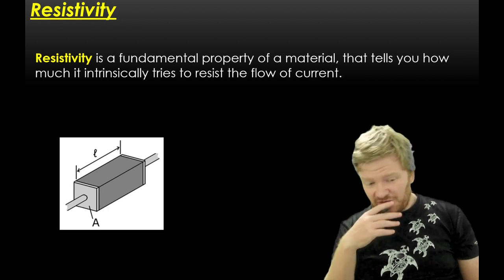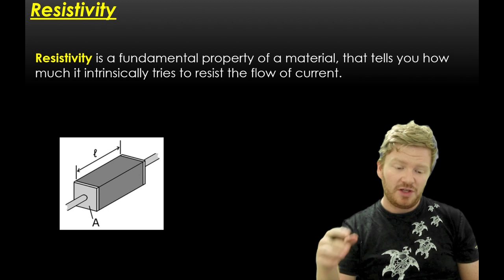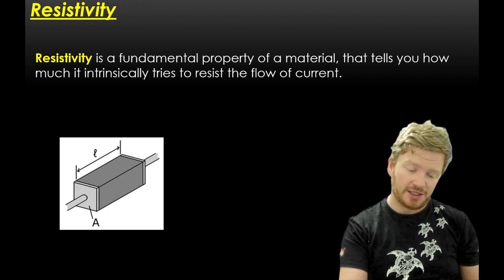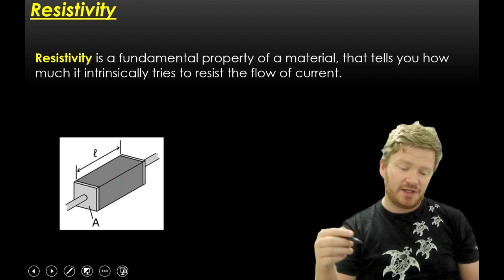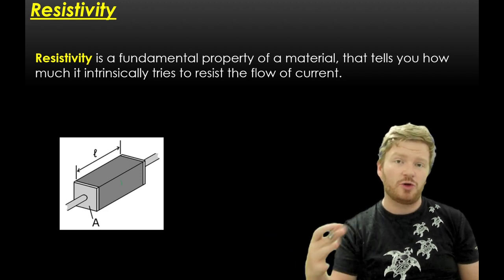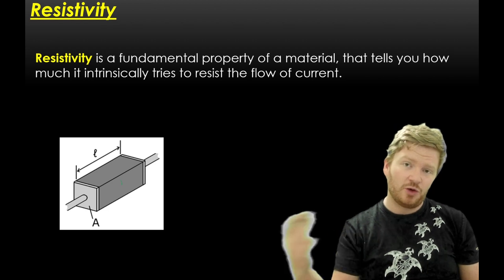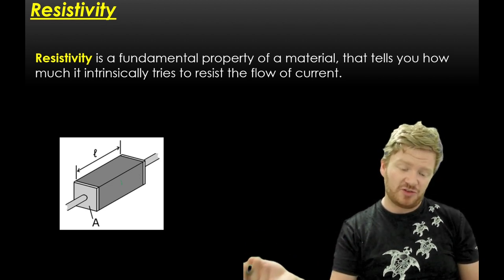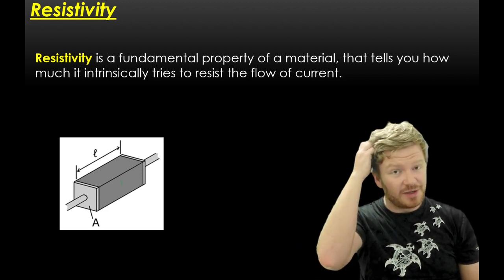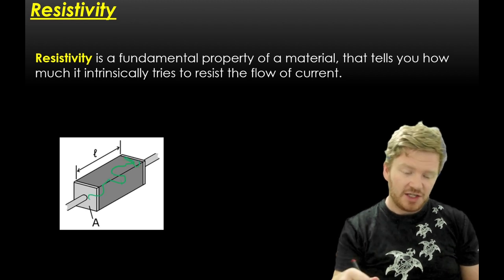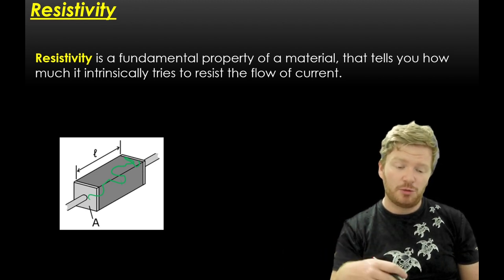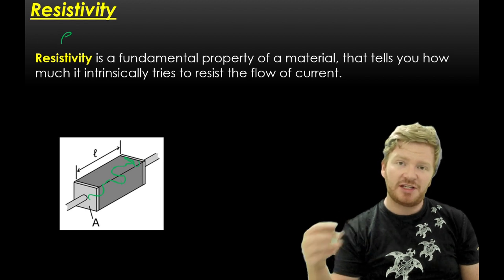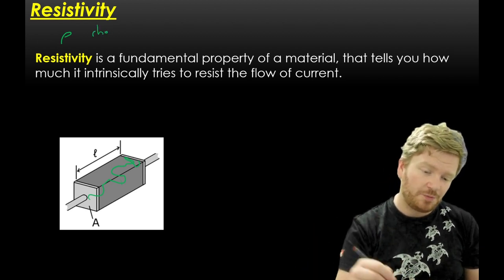Another thing that should be familiar from GCSE is resistivity. Resistivity is a fundamental property of a material that tells us how much it intrinsically tries to resist the flow of current. If you think about a block with cross-sectional area A and length L: if you make the conductor longer, there's more distance for electrons to travel, so greater resistance. Cross-sectional area does the opposite - a bigger area gives more paths for electrons, giving lower resistance. We give resistivity the symbol rho (ρ) - it is not a P, it is a rho.